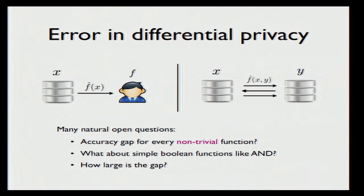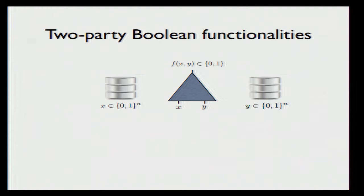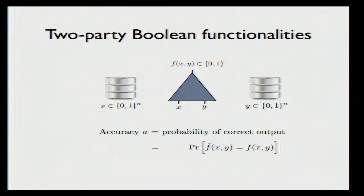To address these questions, we are going to consider interactive differentially private protocols for computing two-party Boolean functionalities. When dealing with Boolean functionalities, the only natural measure of accuracy we can think of is the probability of correct output — meaning the probability with which f-hat equals the actual output, taken over the randomness of f-hat. Since you can define this for every pair of inputs, we are going to focus on the worst case.